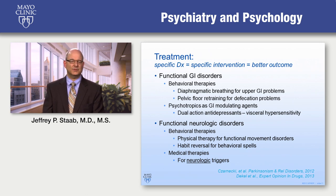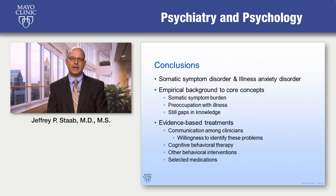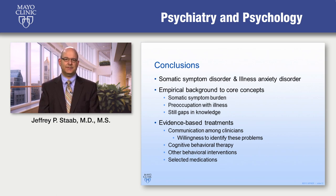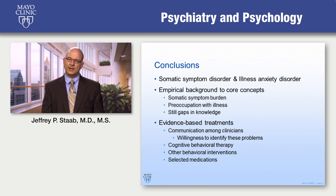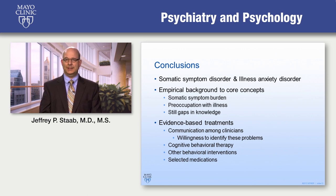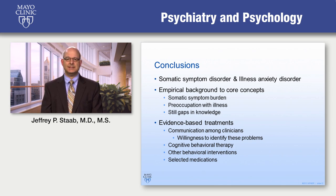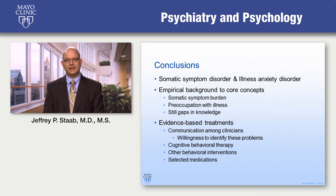Medical therapies for functional neurologic disorders are really focused on coexisting or triggering neurologic events. In conclusion, looking at the background behind the changes from DSM-IV to DSM-5, there is empirical research supporting the core concepts of somatic symptom burden for somatic symptom disorder and preoccupation with illness for illness anxiety disorder. There are still gaps in knowledge about how these two interact. Evidence-based therapies are beginning to accumulate, including our willingness as clinicians to step forward and help primary care and specialist colleagues identify these patients. CBT and other behavioral interventions are leading the way, with selected roles for psychotropic medications as well.